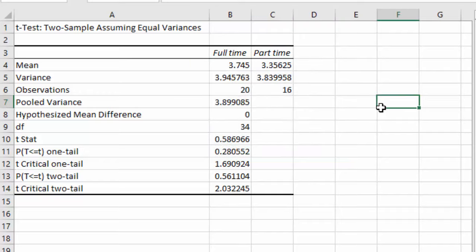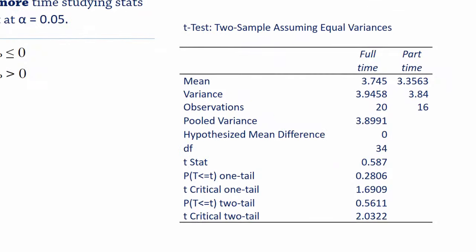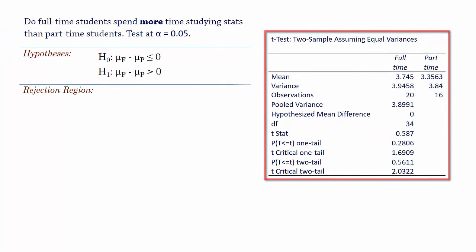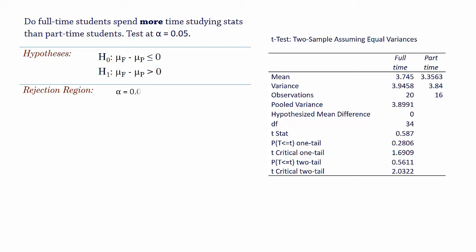And here is the output on a different sheet. Here is the cleaned up output from Excel. For the critical or rejection region, we have a significance level alpha of 0.05, and this is a 1-tailed test, so we use the 1-tailed critical value here.